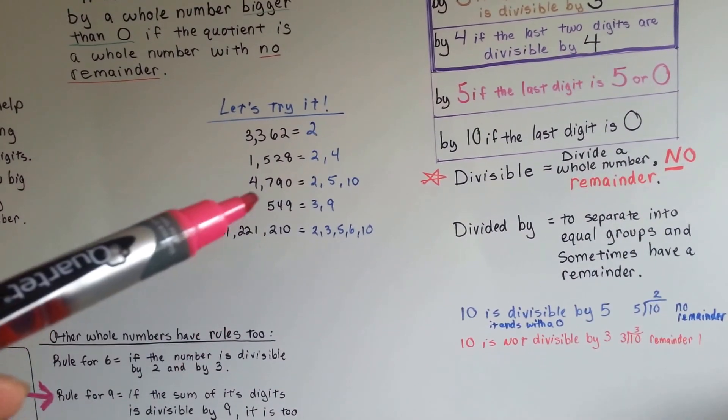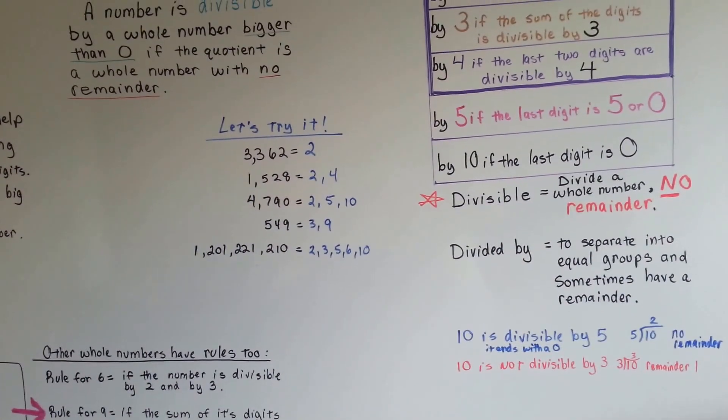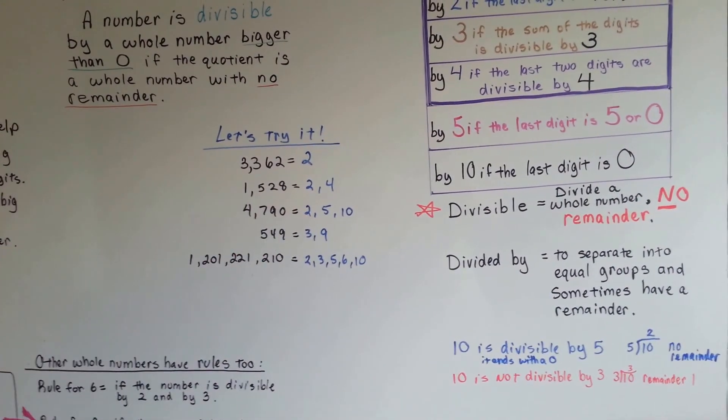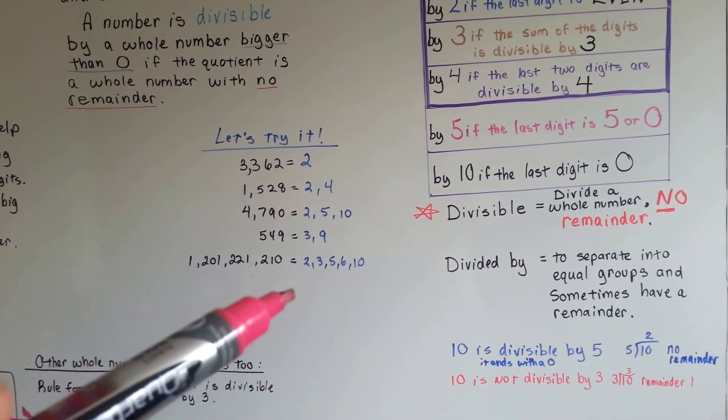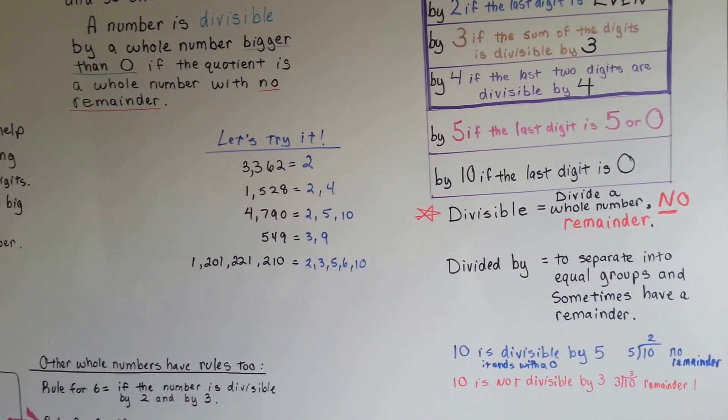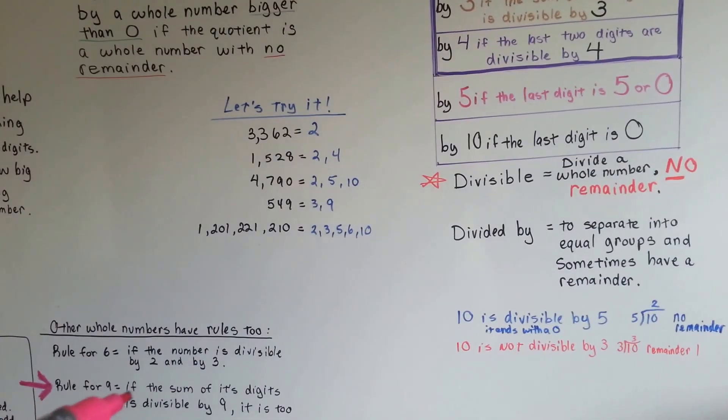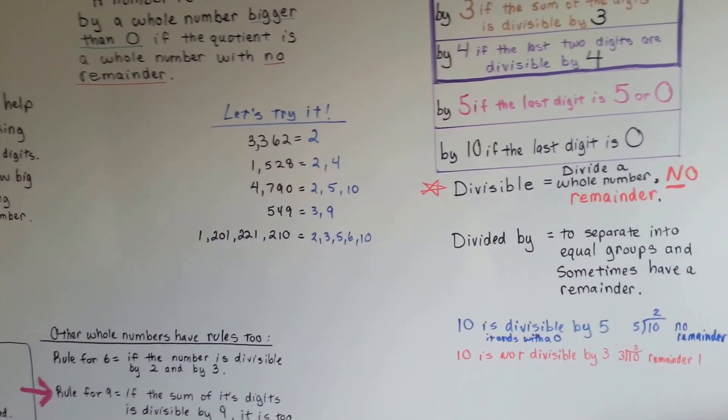So now we're going to do 549. It doesn't have an even number, so 2 is out. It is divisible by 3, because 9 is divisible by 3. And when we add it together, 9 and 9 is 18, so that even proves more that it's divisible by 3, and now we know it's divisible by 9, because it equals 18, and 2 times 9 is 18.